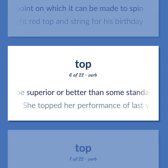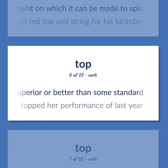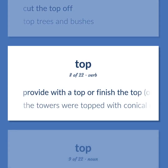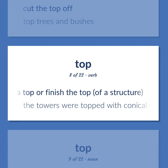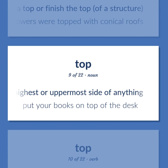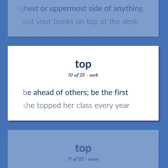Be superior or better than some standard — she topped her performance of last year. Cut the top off — top trees and bushes. Provide with a top or finish the top of a structure — the towers were topped with conical roofs. The highest or uppermost side of anything — put your books on top of the desk. Be ahead of others; be the first — she topped her class every year.